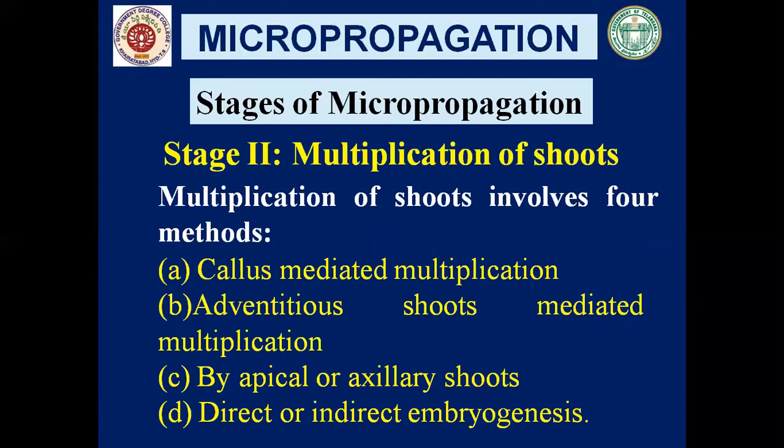The multiplication of shoots involves four methods: callus-mediated multiplication, adventitious shoots-mediated multiplication, multiplication by apical or axillary shoots, and direct or indirect embryogenesis. Whatever the method, it involves the multiplication of shoots.